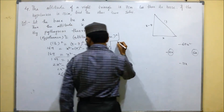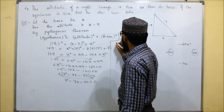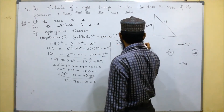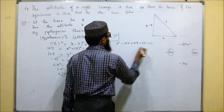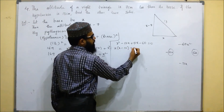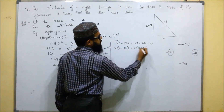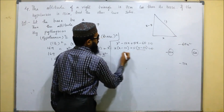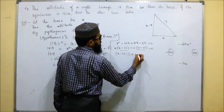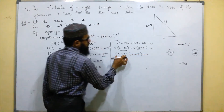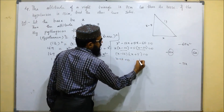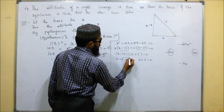So we rewrite as x squared minus 12x plus 5x minus 60 equals 0. Taking x common from the first two terms gives x(x minus 12), and taking 5 common from the last two gives 5(x minus 12). So we get (x minus 12)(x plus 5) equals 0.